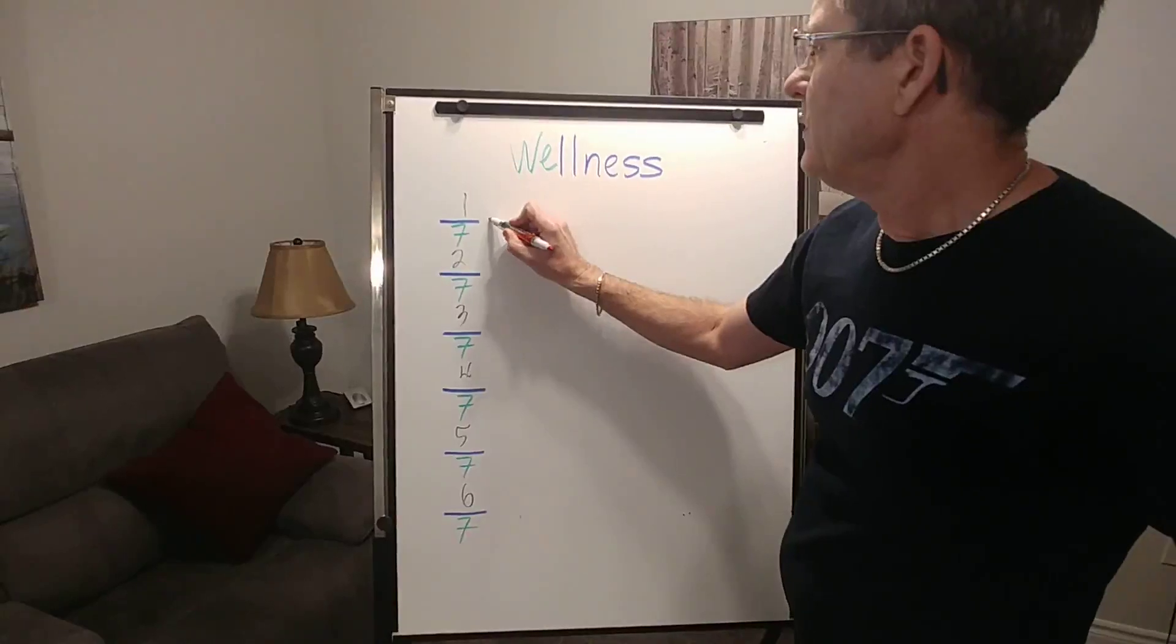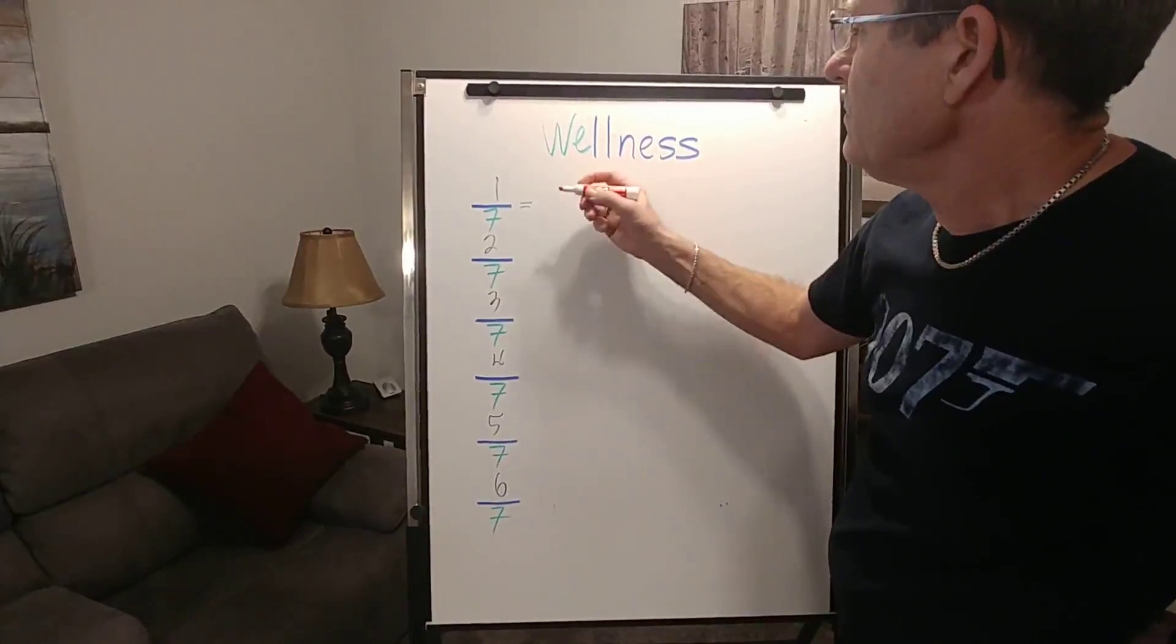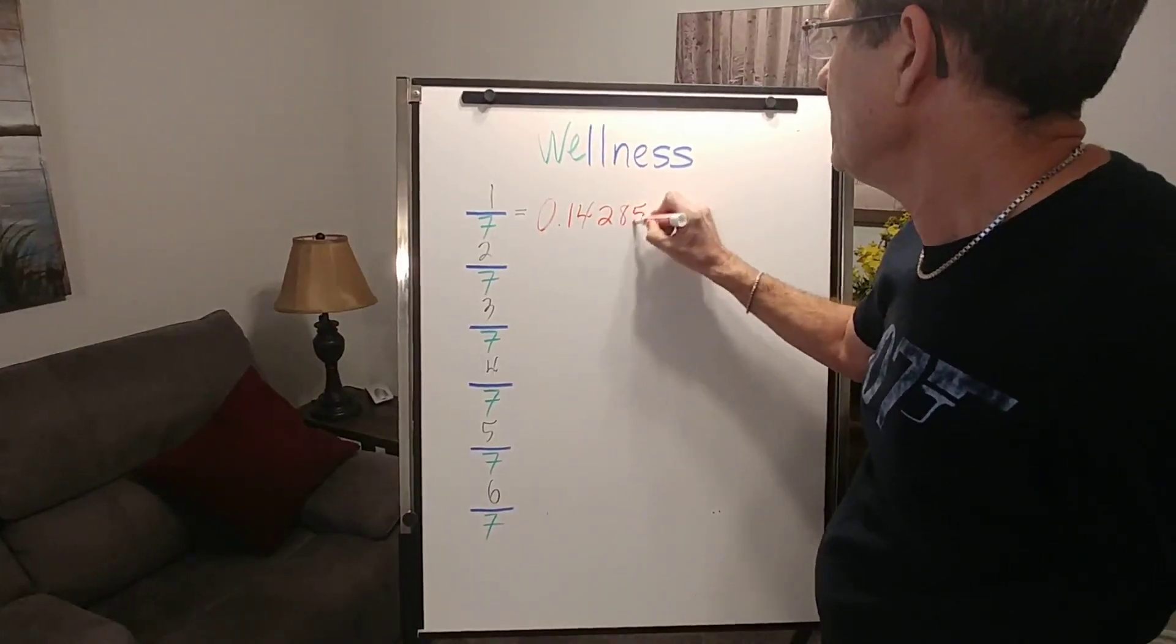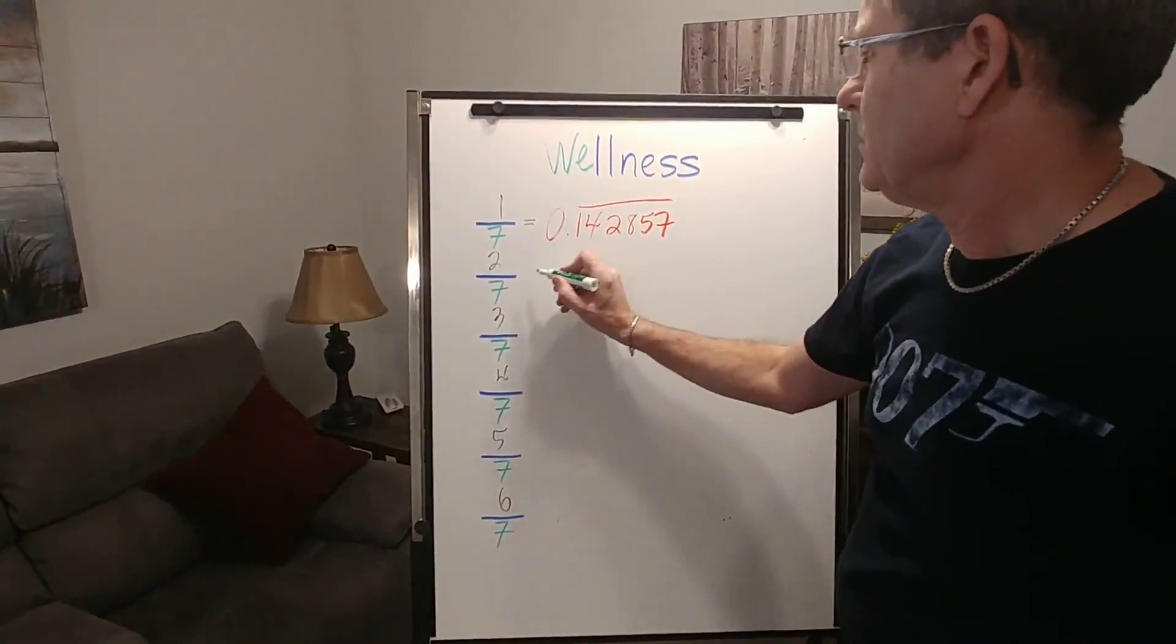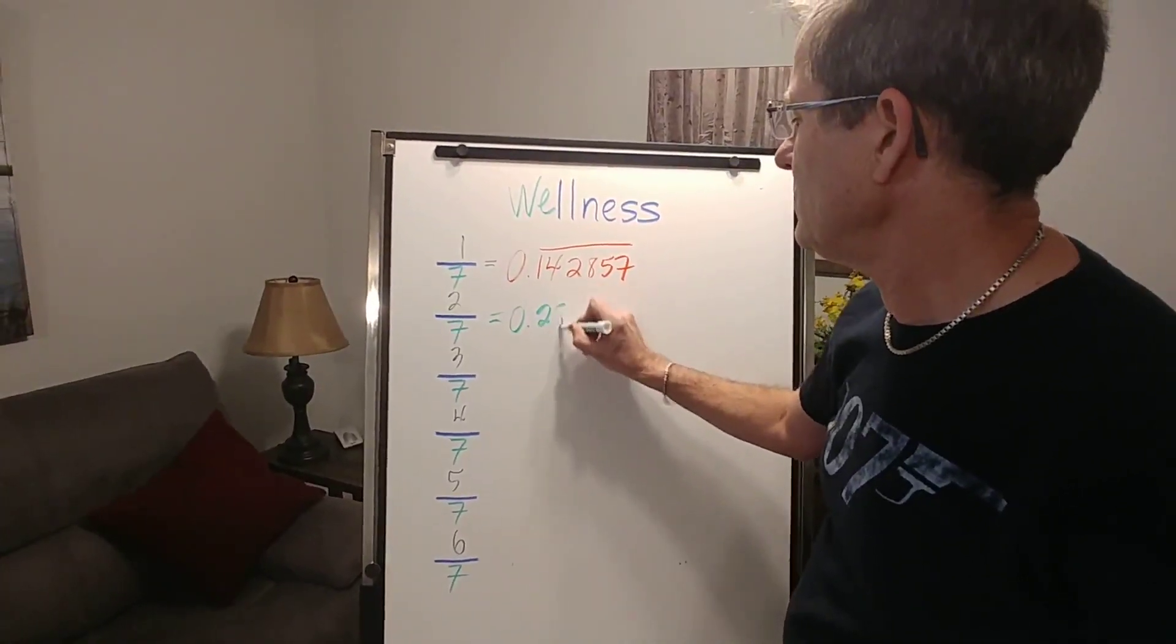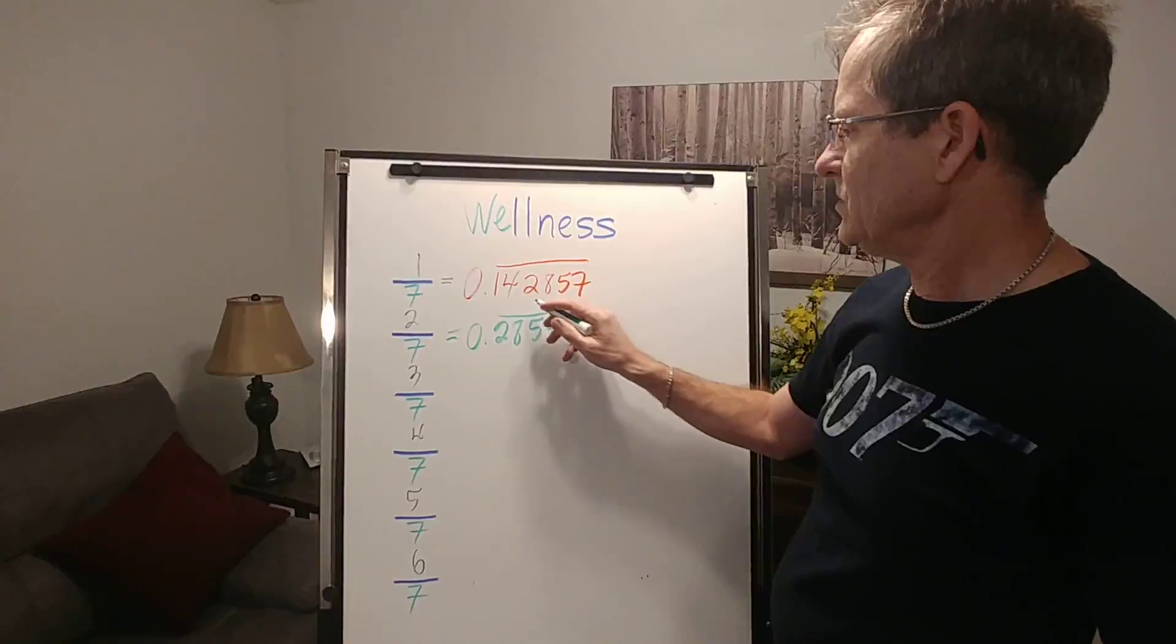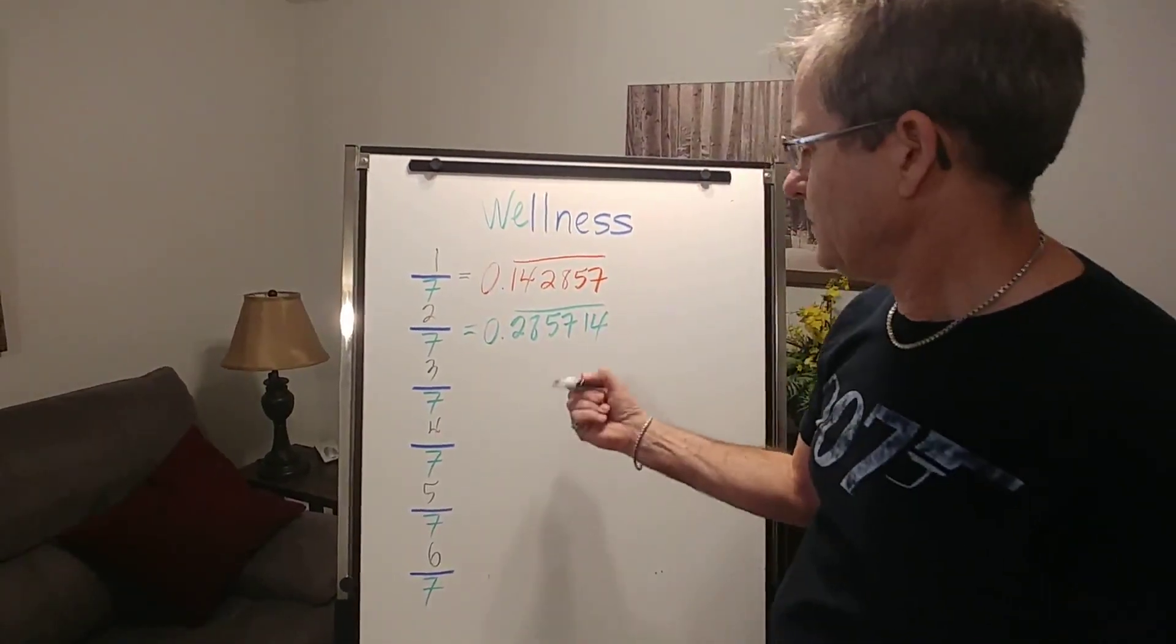What does that equal? Well, 1 divided by 7 is 0.142857 repeated. 2 divided by 7 would be double that, so 0.285714 repeated. The numbers have to be the same, so they just cycle: 2, 8, 5, 7, 1, 4.